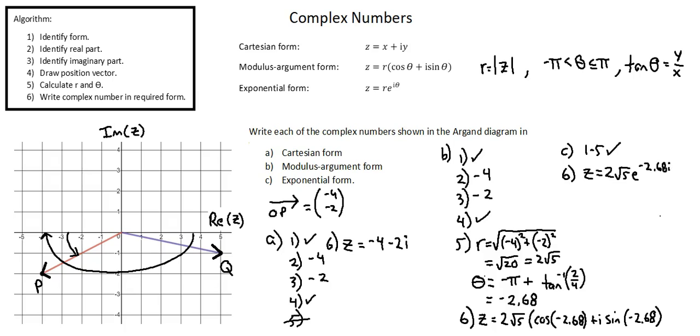This is the exponential form of the complex number. We've completed A, B, and C for the complex number represented by the position vector OP.